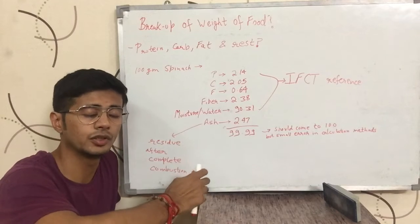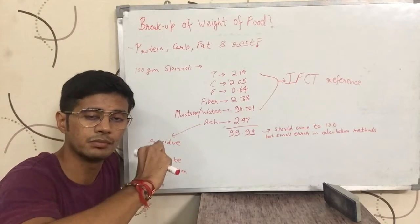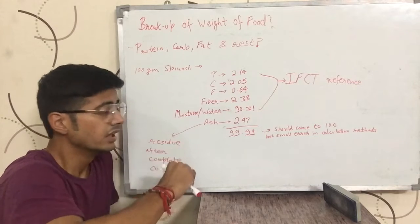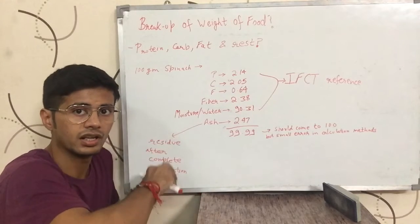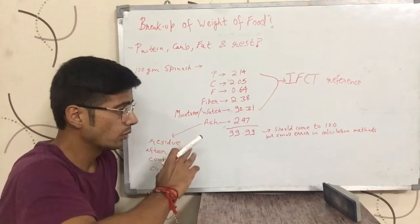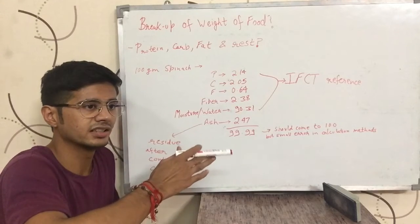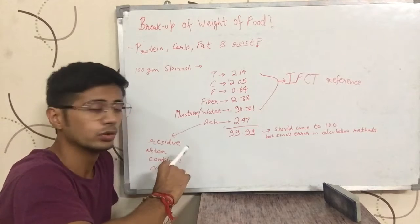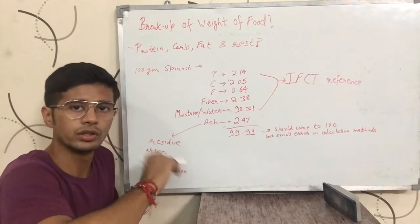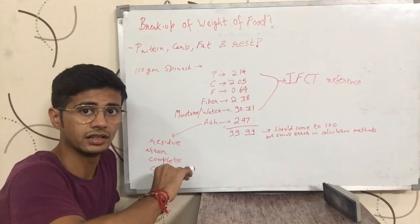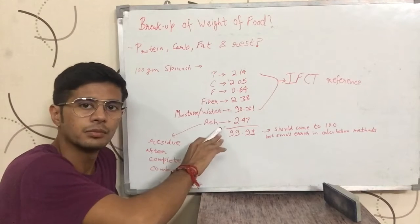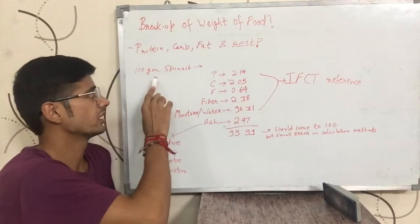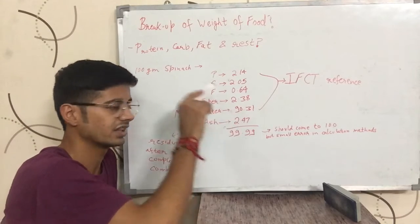What is ash content? If you do complete combustion of spinach, the residue after complete combustion has some weight and that residue is called ash. Basically, complete combustion burns off water and organic materials, so you are left with inorganic materials. After complete combustion of 100 grams of spinach, you would be left with 2.47 grams of ash.